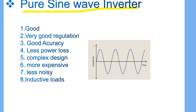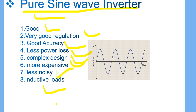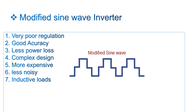The second type is the pure sine wave inverter — this is the best inverter. When purchasing in the market, make sure you are buying a pure sine wave inverter. It has very good regulation, good accuracy, less power loss, complex design, and is more expensive. It is also less noisy — a normal square wave inverter makes a lot of sound which can be irritating. Pure sine wave inverters are very good for inductive loads such as motors.